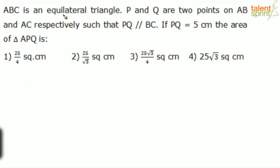Let's consider an equilateral triangle. ABC is an equilateral triangle, so let's take that. This is ABC which is an equilateral triangle. All three sides are equal. Now he says P and Q are two points on AB and AC. So let's say this is the point P on AB and Q is the point on AC such that PQ is parallel to BC.